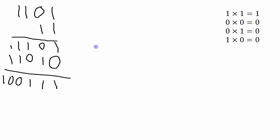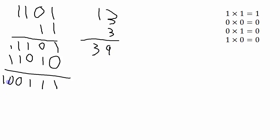To check if I've done this multiplication correctly, let's convert these base two numbers into base ten numbers. 1101 is equal to thirteen, and 11 is equal to three. Thirteen times three gives me thirty-nine. Now looking at our result: one plus two plus four plus eight plus sixteen plus thirty-two — so thirty-two plus four plus two plus one — also equals thirty-nine in base ten. So it looks like we've done this multiplication correctly.